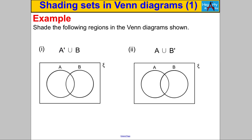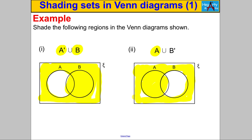Next examples — pause the video and think about these. 'Not A union B': first shade everything that's not A — everything outside A. Then, because it's union, use the same color to shade in B, including the extra bit inside B you haven't shaded yet. That gives you not A union B. For 'A union not B': shade in A first — everything inside circle A — then union means same color, so shade everything that's outside B. That's the completed region, and here's a neater version of both answers.